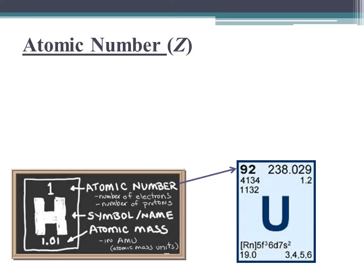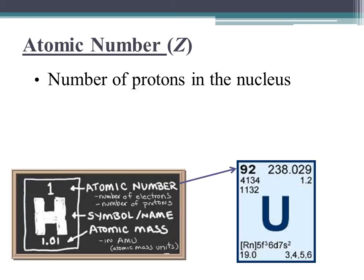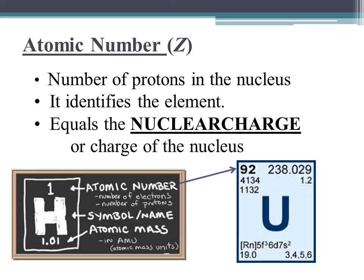All the atoms of a particular element have the same number of protons in the nucleus. This number is a basic property of an element called its atomic number, given by the symbol capital Z. In a neutral atom, the number of protons in the nucleus is exactly equal to the number of electrons outside the nucleus. For example, the element hydrogen has an atomic number of 1, and uranium has an atomic number of 92. All hydrogen atoms have one proton in the nucleus, and all uranium atoms have 92 protons in the nucleus.